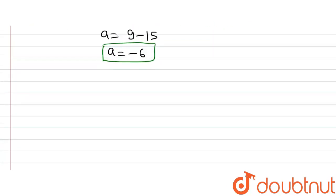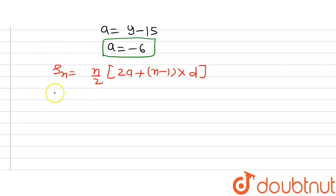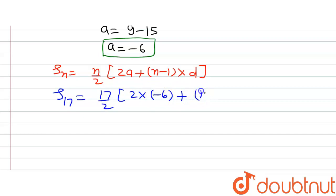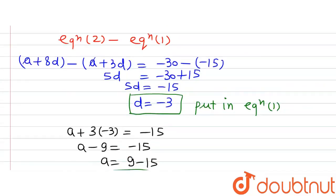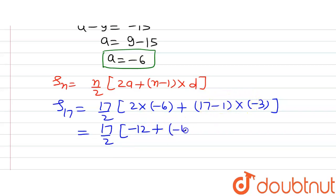Now let us find the sum of the first 17 terms. The formula for the sum of N terms of an AP is: Sₙ = N/2 × [2A + (N − 1)D]. Here N = 17, A = −6, and D = −3. So we have S₁₇ = 17/2 × [2(−6) + (17 − 1)(−3)] = 17/2 × [−12 + 16 × (−3)] = 17/2 × [−12 + (−48)].